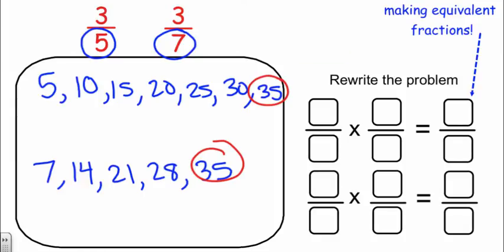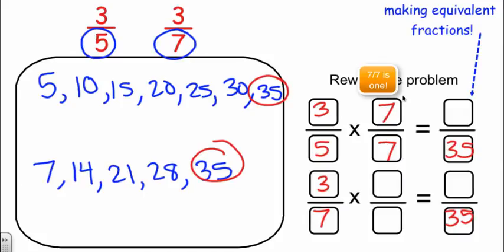So let's go ahead and start by putting the original fractions in the first boxes here. So I started with 3 fifths and 3 sevenths as my original fractions. I know that my least common denominator for these two fractions is 35. So 5 times what gets us to 35? 5 times 7 is going to get us to that 35. Whatever I do to the denominator of this fraction, I also have to do to the numerator. So 7 over 7 is the same as multiplying this fraction by 1. 3 times 7 is going to give us 21 in our numerator.